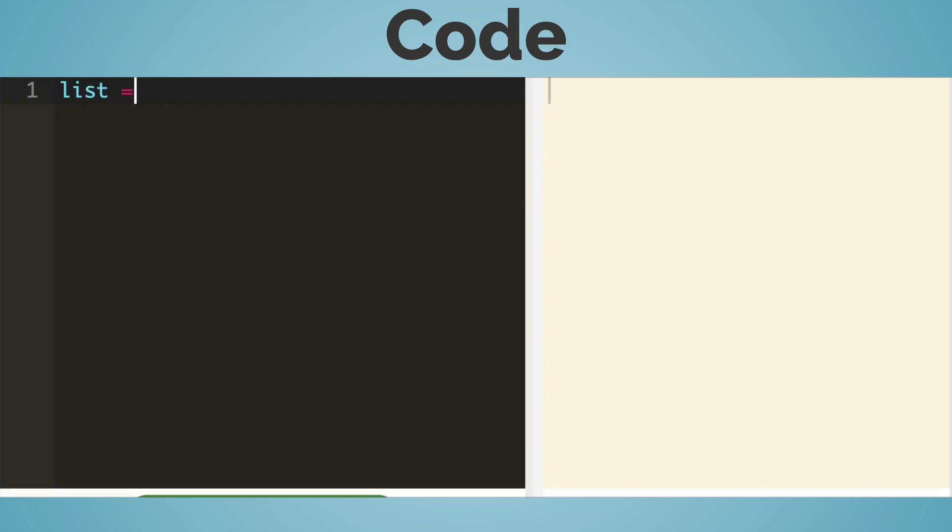Let me create a variable called list, equal range 1 to 11. Print list. Oh, I got 1 to 10 in the output.